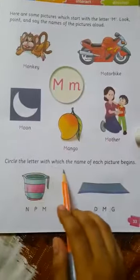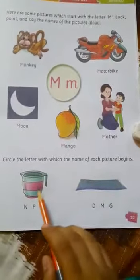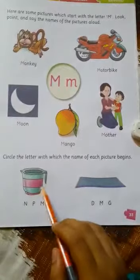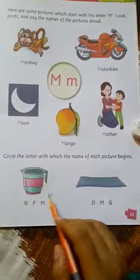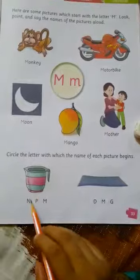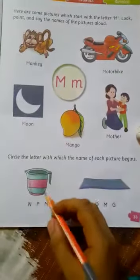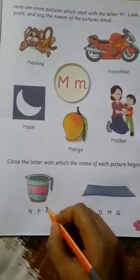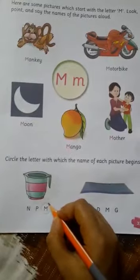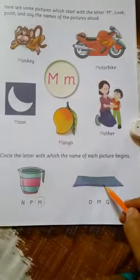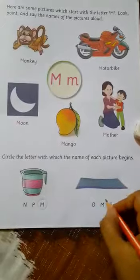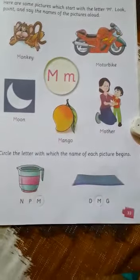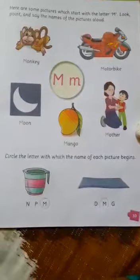Then circle the letter with which the name of each picture begins. Here are two pictures — you have to circle the letter with which their name is beginning. It is a mug, M for mug, so circle the letter M. Then it is a mat, M for mat, circle the letter M. Thank you.